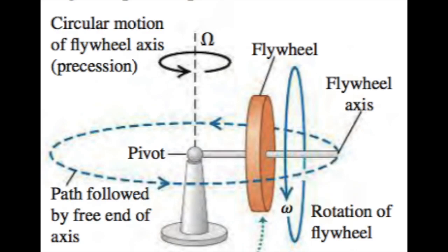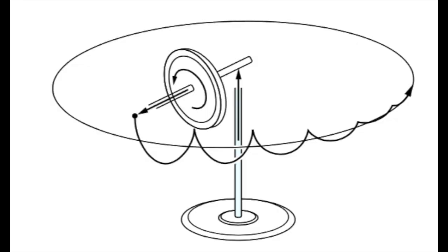When the wheel and its axis are stationary, they will fall to the table surface. When the wheel spins, it and its axis float in the air while moving in a circle about the pivot. This surprising, non-intuitive motion of the axis is called precession.